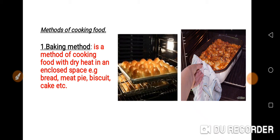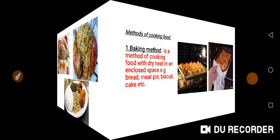What are the types of food prepared in the oven using baking method? Examples include bread, meat pie, biscuit, cake, etc., as you can see on the screen.